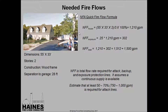The NFA quick fire flow formula is one of my favorites because it's very easy to apply in the field. You simply calculate the floor area of the building, divide that by three, and multiply it by the percentage of involvement, which gives you your GPM recommended for the structure. In this case, we have a 55 by 33 foot building that's two stories tall, divide that by three, times 100, and we end up with 1,210 GPM for the house.